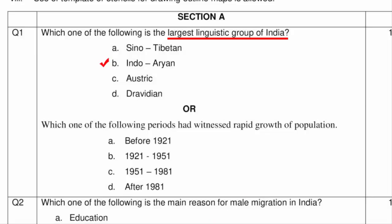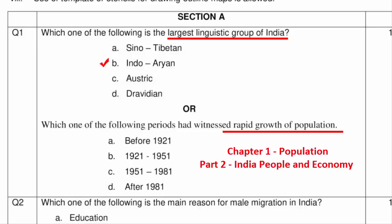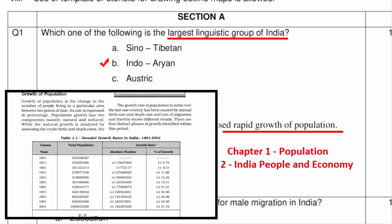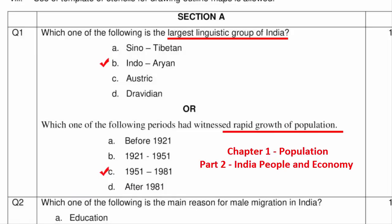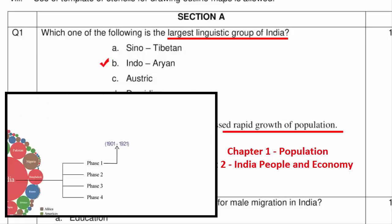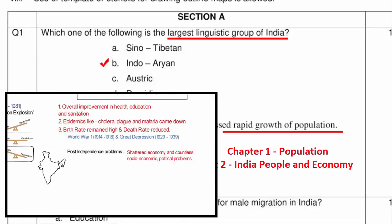The second part of Question 1 asks which period witnessed rapid growth of population. This is from the same chapter, under the topic growth of population, where growth is divided into 4 phases. The answer is Option C: from 1951 to 1981, population growth increased from 13.31% to 24.66%. The reason is that birth rate went higher than the death rate during the post-independence era. Five-year plans were introduced, and people from neighboring countries like Pakistan, Tibet, and Nepal migrated to India, contributing to the population explosion.